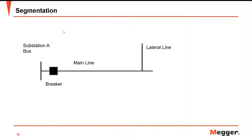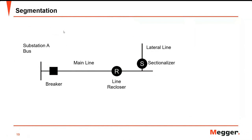Segmentation: if there's a fault at a lateral line, the breaker trips and the whole feeder loses power. If you add a recloser in the main line and the same fault occurs, only a portion of the main line and the lateral line loses power. This is beneficial to the utility in terms of reliability indicators and energy sales.